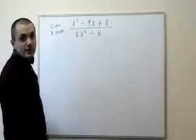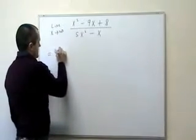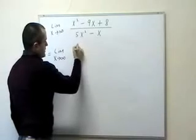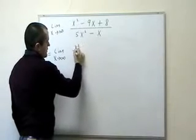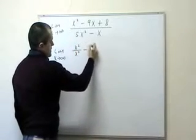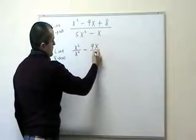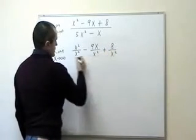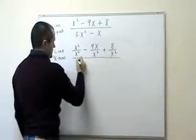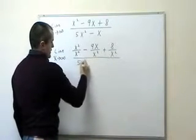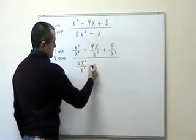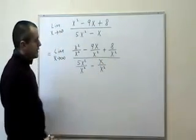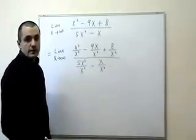So let's divide every term by x squared. We're going to get the limit as x goes to infinity of x squared over x squared minus 9x over x squared plus 8 over x squared all over 5x squared over x squared minus x over x squared. So you can see that I've divided every term by x squared.